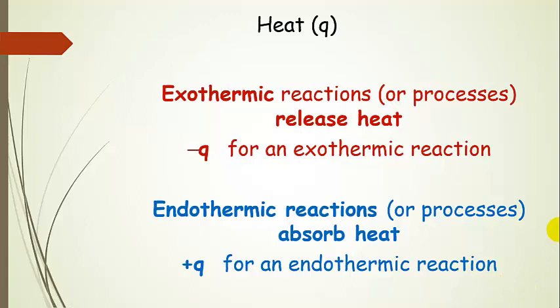Finally, let's introduce the concept of heat — we'll talk about it a lot more throughout this unit. For exothermic reactions or processes, exothermic releases heat, so the sign of Q is negative — that's heat out for an exothermic reaction. These are the ones that generally feel hot. Endothermic reactions or processes absorb heat, so these have a positive Q. They absorb heat from the surroundings and generally feel cool. If you're holding something and it feels cold, that is an endothermic reaction drawing heat out of you and into itself.